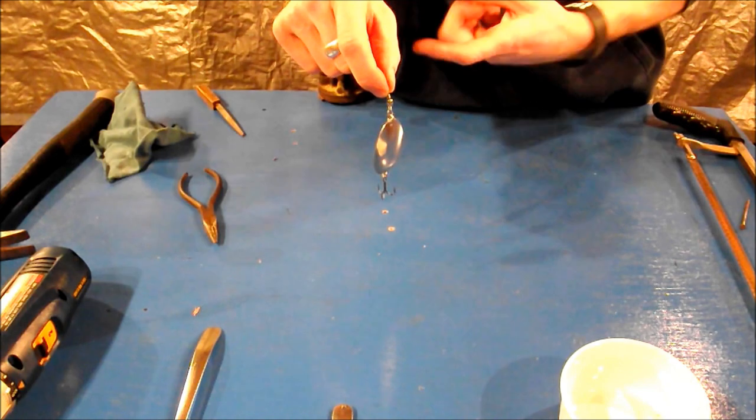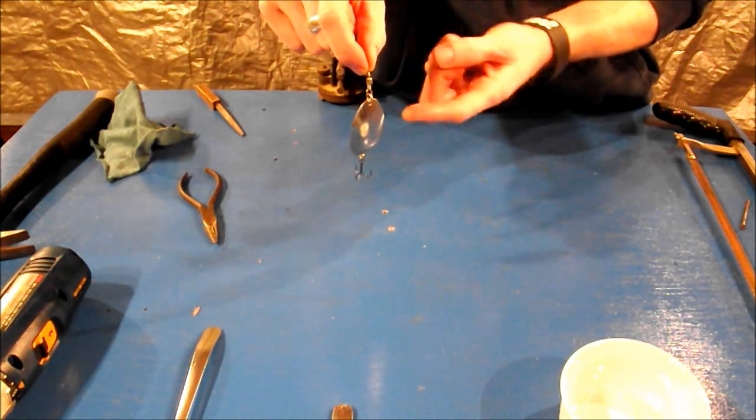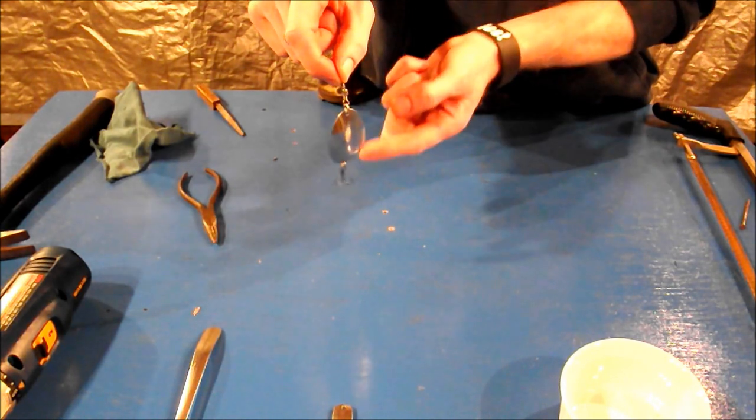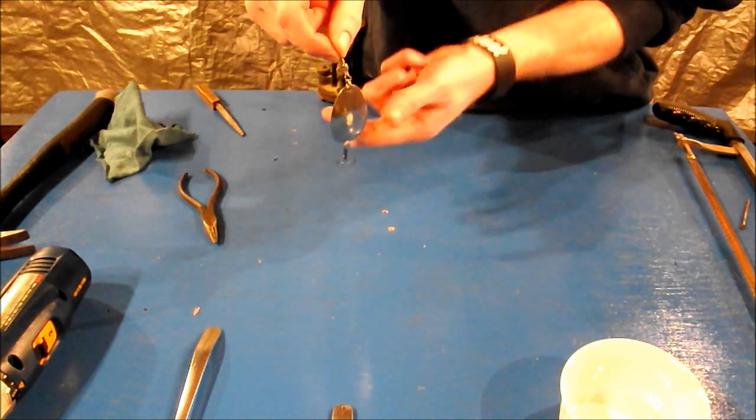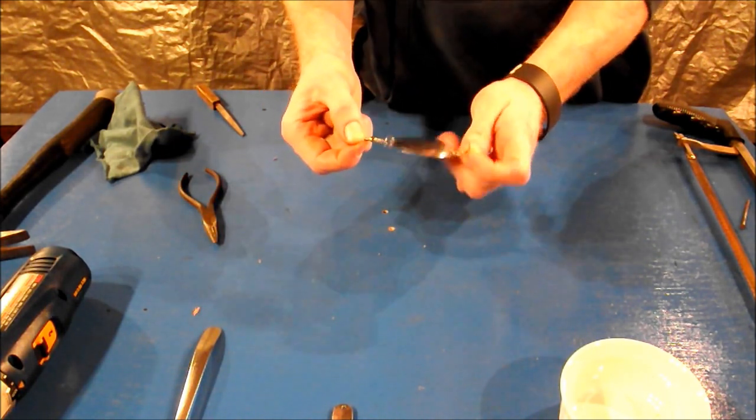To finish your lure, attach the split ring with the swivel to the end of the lure or the end of the spoon that you want the line to come from, and the split ring and the treble hook to the other end. That's all you need to do.